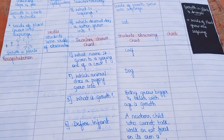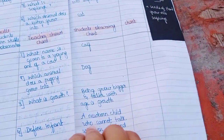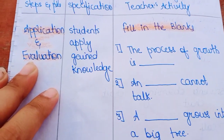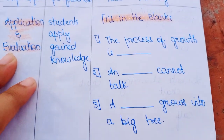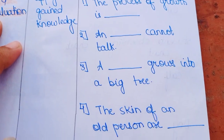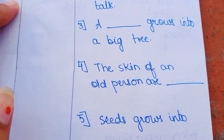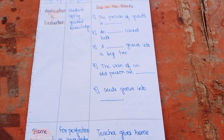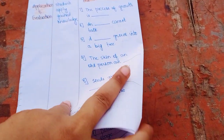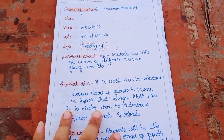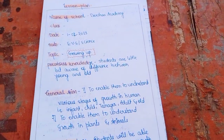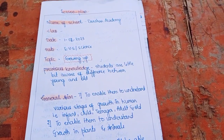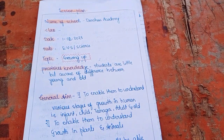The last page is Application and Evaluation. Here I have mentioned fill-in-the-blank questions — we can ask five questions only, do not add more than that; I have added five here. For home assignment, we give some work to students for reinforcement of their knowledge. This was my lesson plan on the topic 'Growing Up.' If you liked this video, please like, share, and subscribe to my channel. For more Science and EVS lesson plans, please check the description box. Thank you.